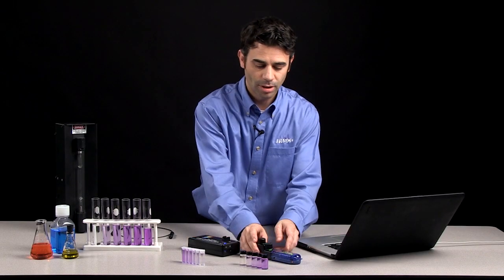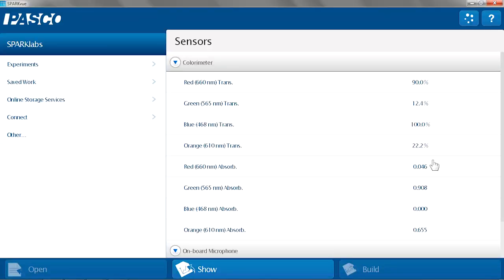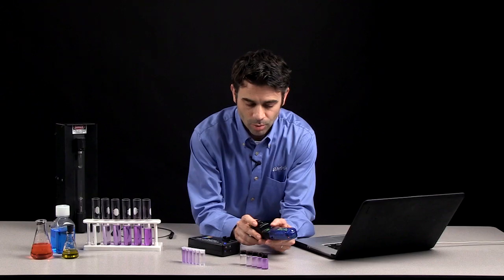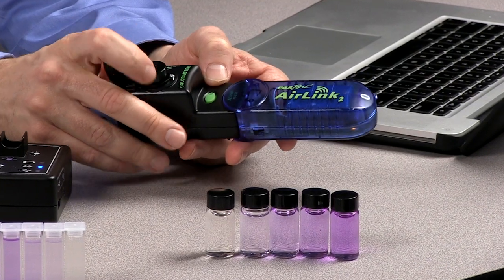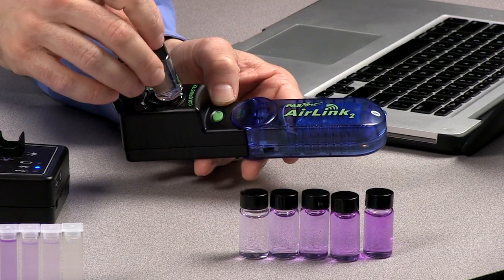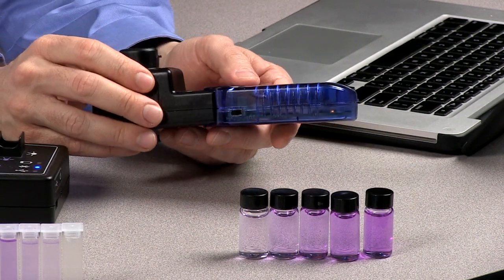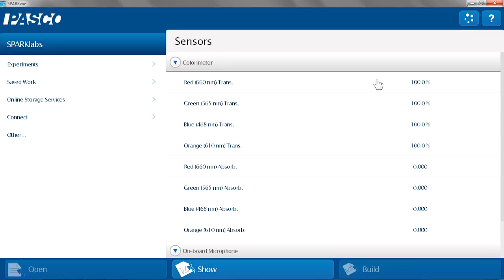So first we'll talk about the colorimeter. I have the colorimeter Bluetooth connected to SparkView, but it also works with Capstone. One of the great features of the colorimeter is that it's a quick one-button calibration. So I simply put in my blank, push the button, and allow it to calibrate so that I get 100% transmittance and zero absorbance for the four LEDs that are present.